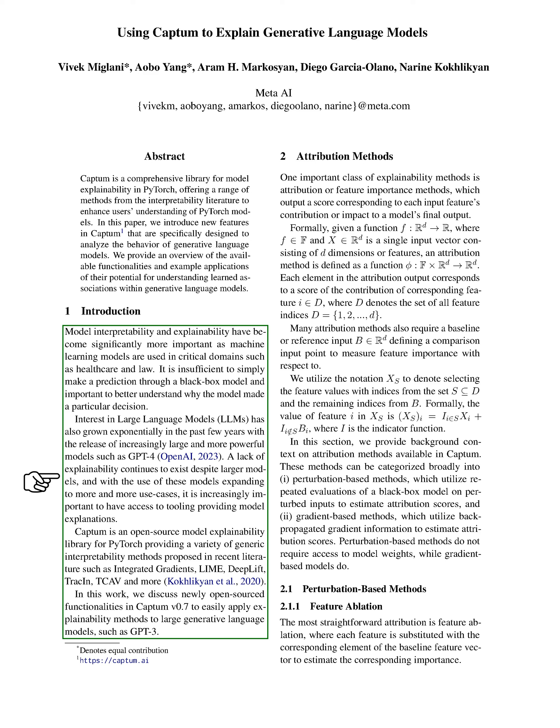One such tool is Captum, an open-source library for PyTorch that offers a range of methods for interpreting models, such as integrated gradients, LIME, DeepLift, TrackIn, TCAV, and more. In this paper, we'll discuss new features in Captum version 0.7 that make it easier to apply these interpretability methods to large generative language models like GPT-3.